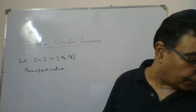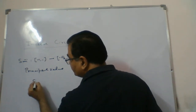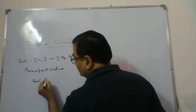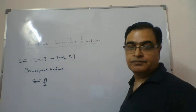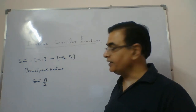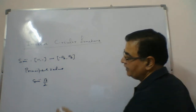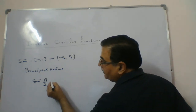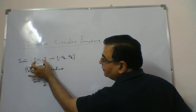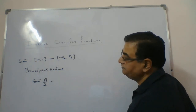So when you think about principal value, for example, if I say: find out sine inverse of root 3 by 2. This is the question — we are asking what is the principal value. Whenever they ask the principal value, this root 3 by 2 is coming from the domain, and it is between minus 1 and 1, so there is no problem.